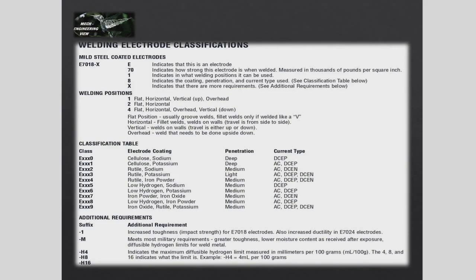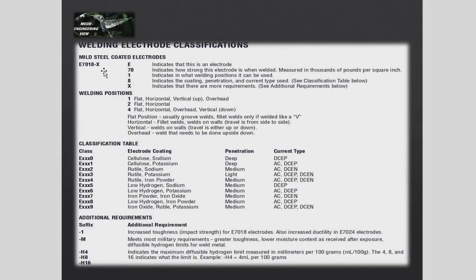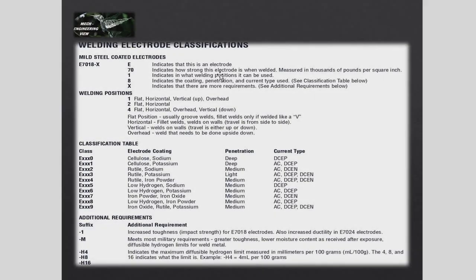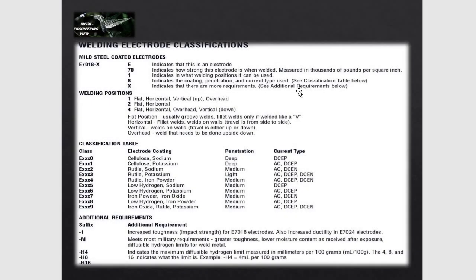E7018 is the designation. If you have the data, you will know what electrode it is. E7018 — 'E' means welding electrode. '70' — what does it mean? How strong is this electrode when welded? The strength is indicated in 1000 psi per square inch, that is KSI. So 70 KSI.